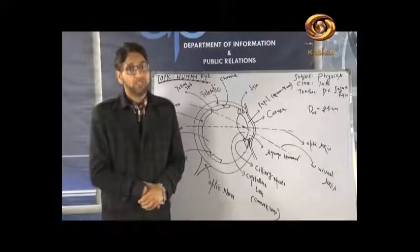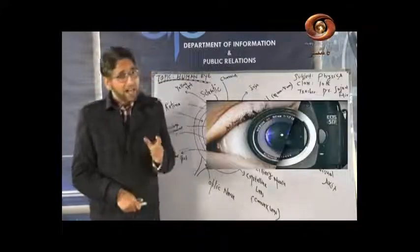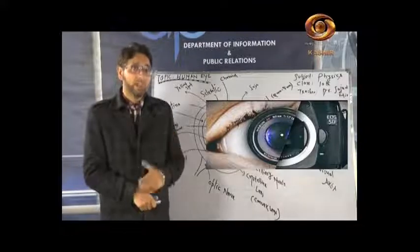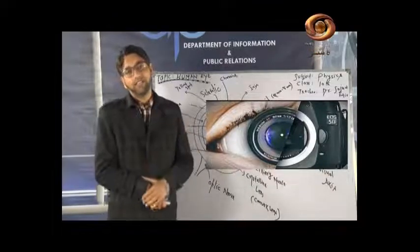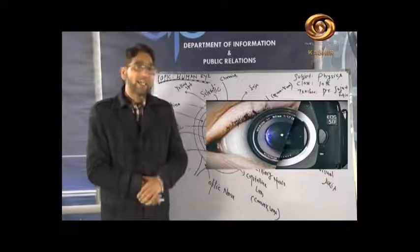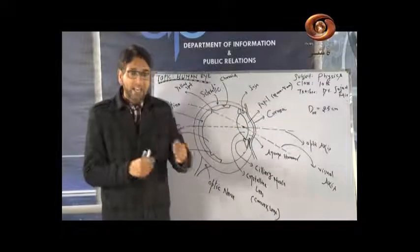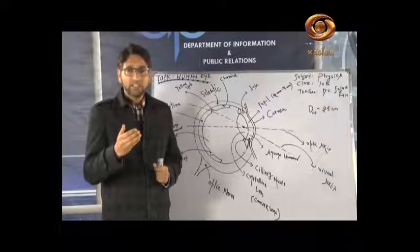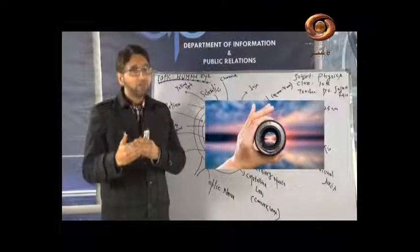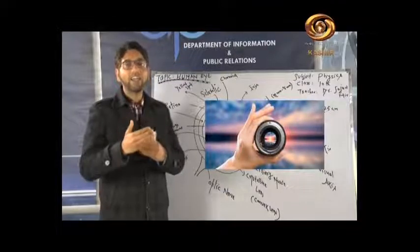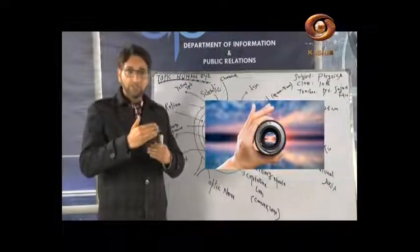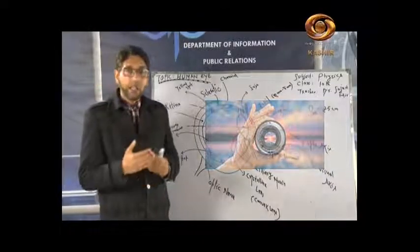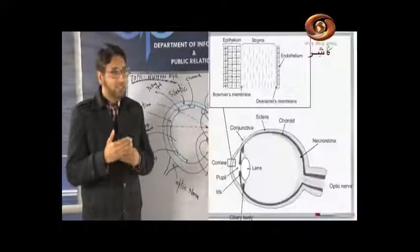Before we go further, children, remember: our eye is like a camera — I am using an analogy here. The camera is actually an imitation of the eye; we have imitated nature. However, the difference between a camera and our eye is this: in a camera, to focus on an object, you vary the distance between the photographic film and the lens. But in the eye, you cannot change that distance.